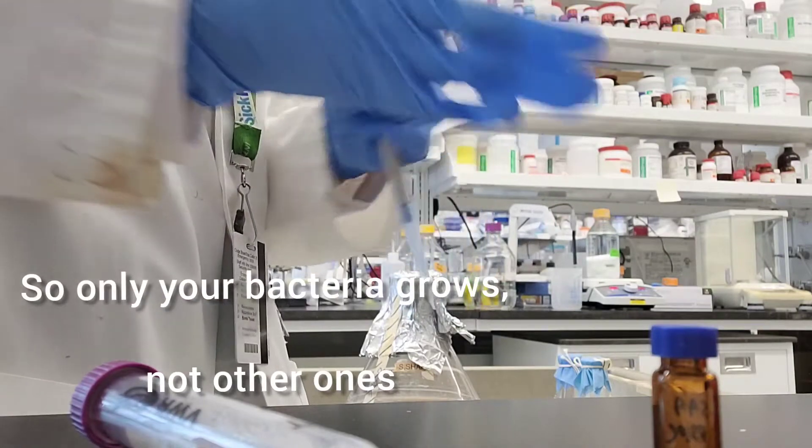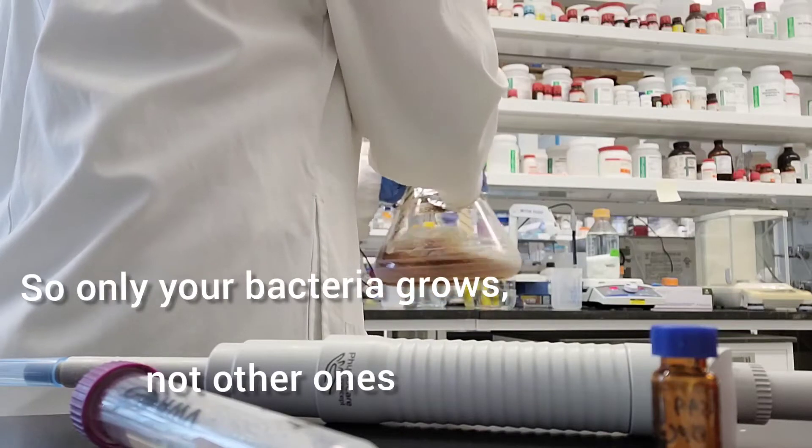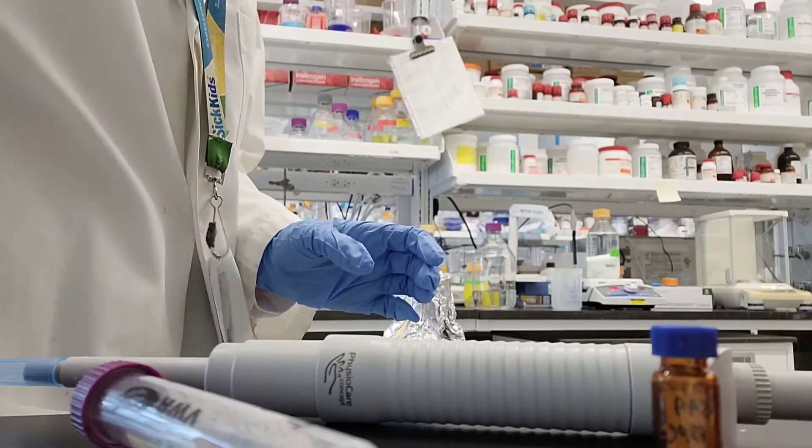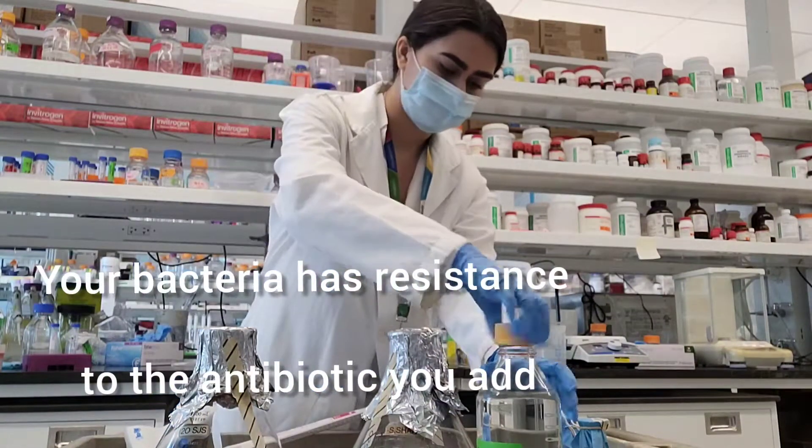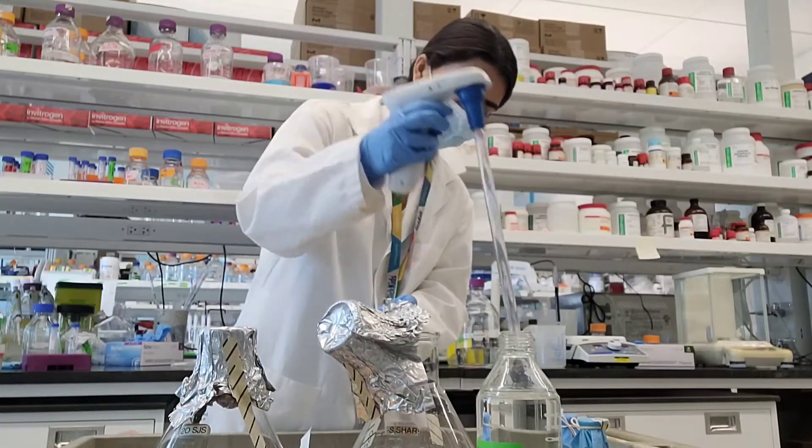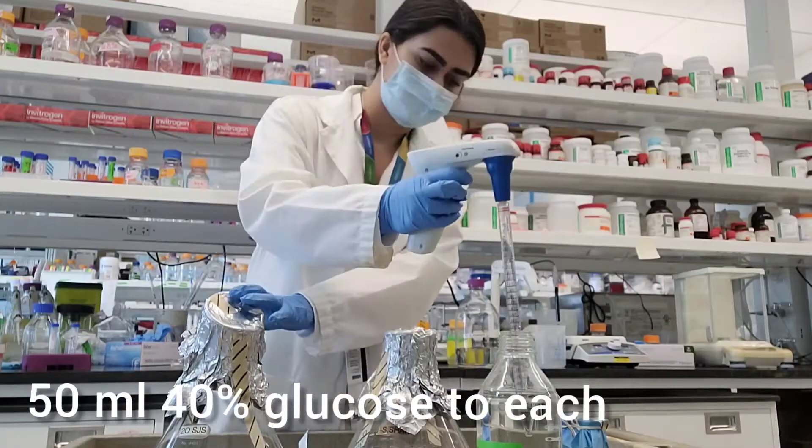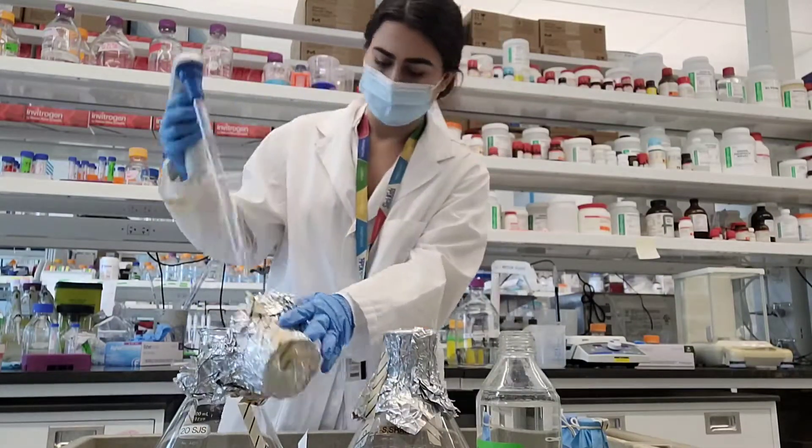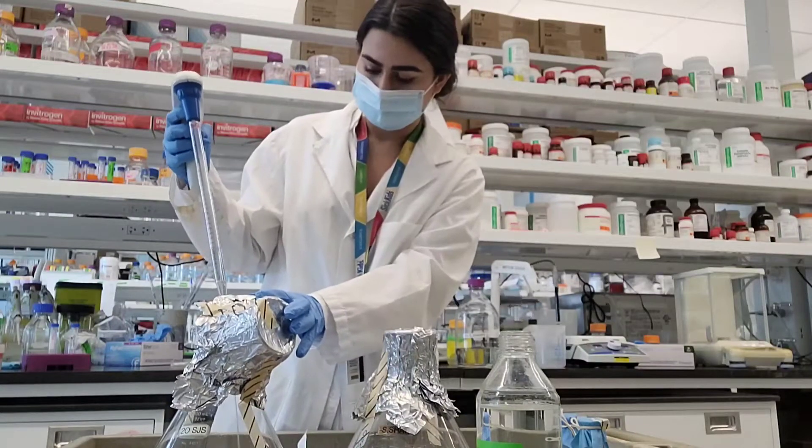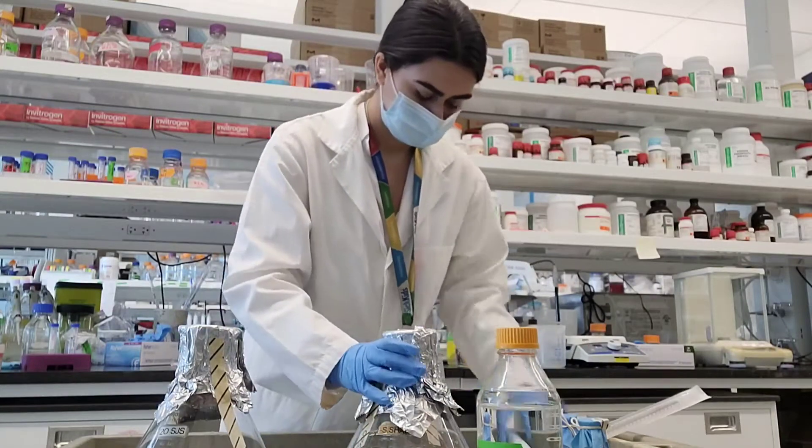The antibiotic will make sure that only your bacteria is going to grow and not the bacteria that is present in the surrounding air or anything that might accidentally get in there. You only want your bacteria to grow. Now I'm adding 50 mils of the 40% glucose to each one liter flask because they need sugar as a food source as well.